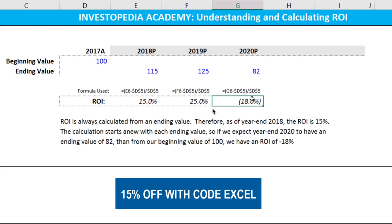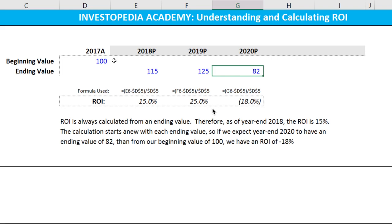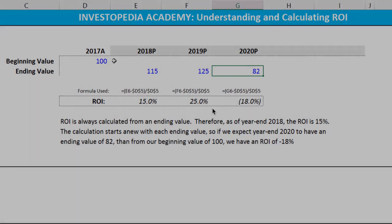It is preferable to link the returns year-over-year, which is effectively an annual rate of return or a compounded rate, whereas this just takes each year in static and assumes that this is an arbitrary endpoint in our calculation. But this video shows you the basics of how to calculate it, and it's quite simple to do.